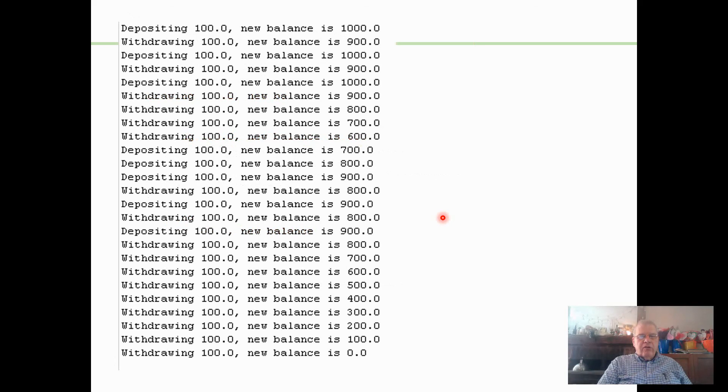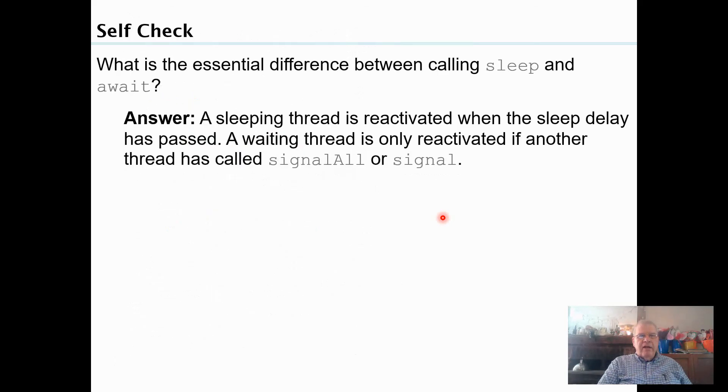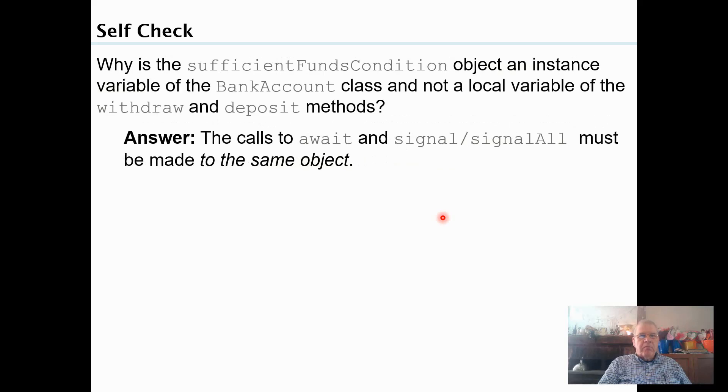The difference between sleep and await is that sleep just gets reactivated when the sleep delay is passed. A waiting thread is only reactivated if another thread has called signalAll or signal.